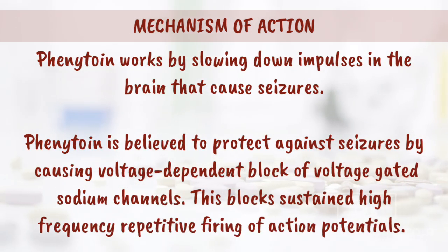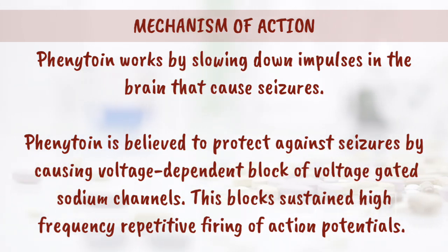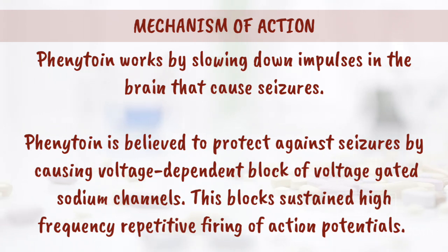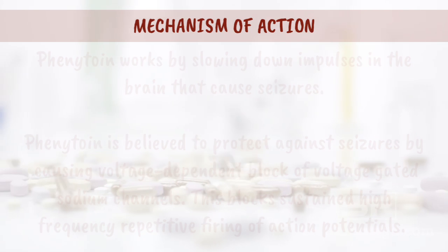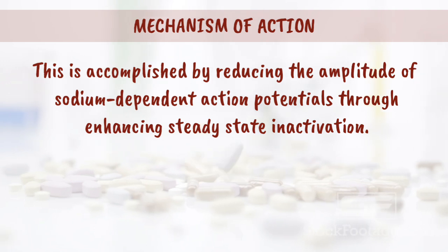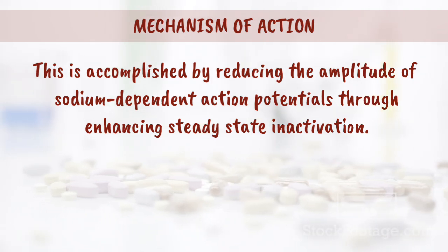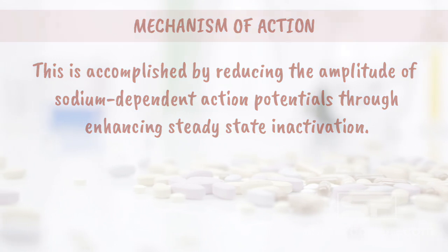Mechanism of Action: Phenytoin works by slowing down impulses in the brain that cause seizures. It is believed to protect against seizures by causing voltage-dependent block of voltage-gated sodium channels, blocking sustained high-frequency repetitive firing of action potentials. This is accomplished by reducing the amplitude of sodium-dependent action potentials through enhancing steady-state inactivation.